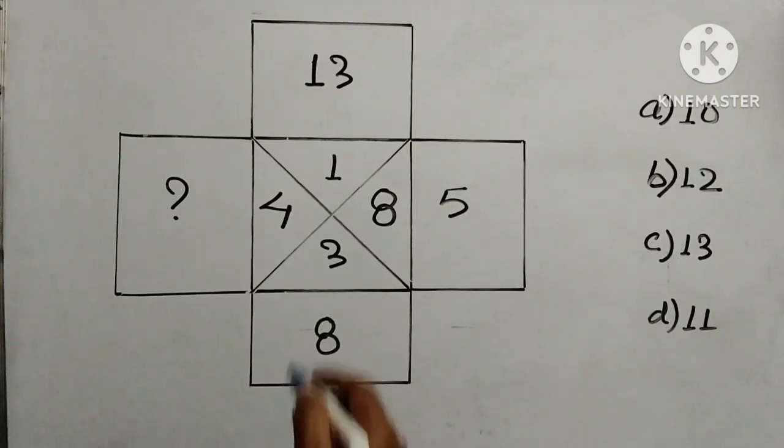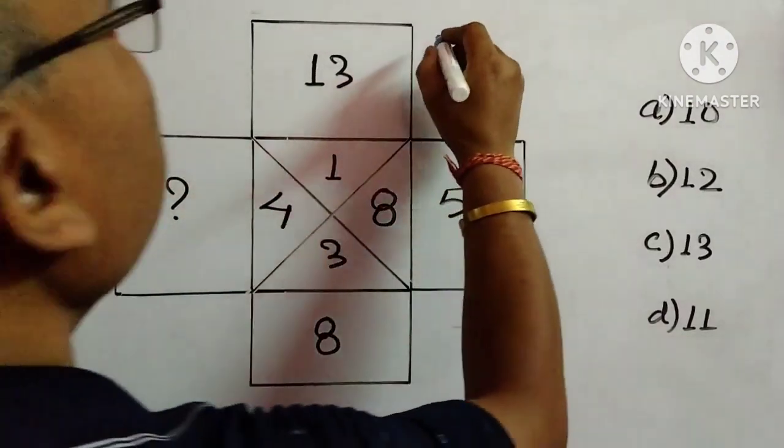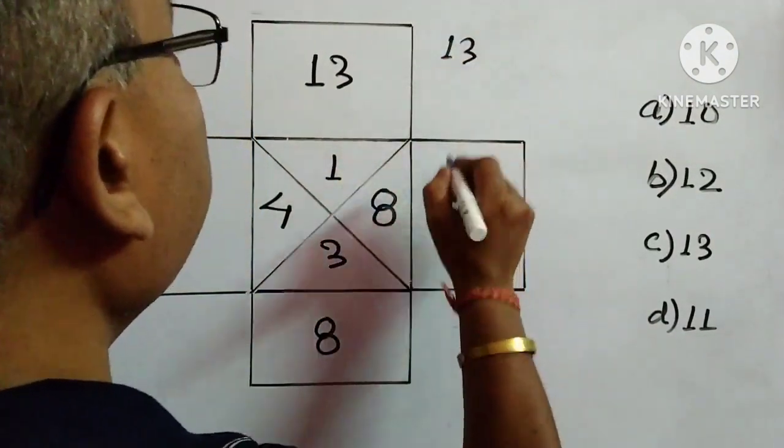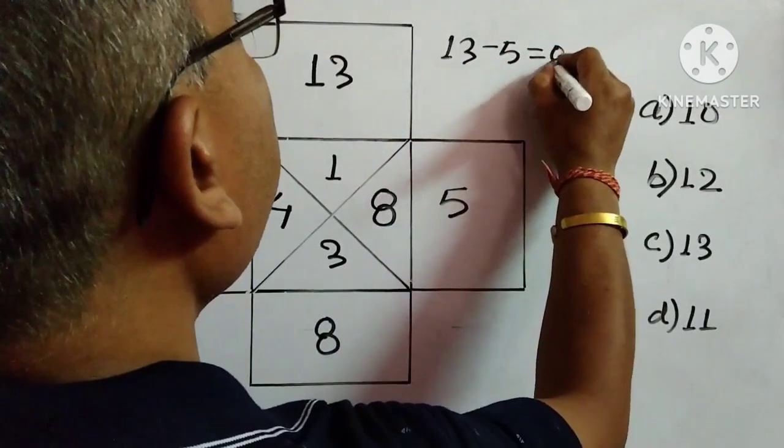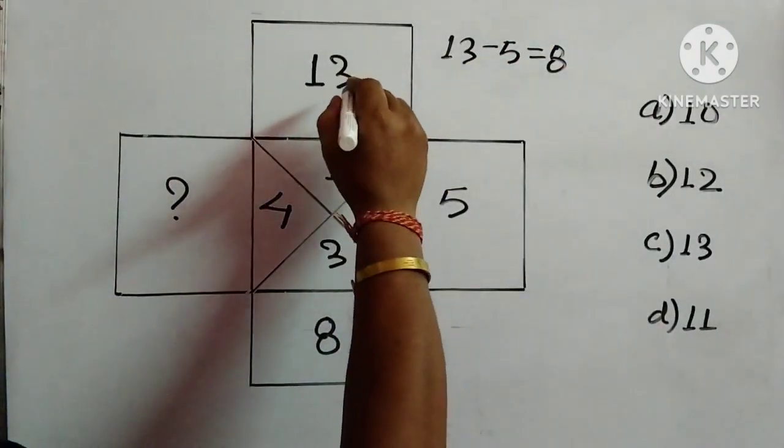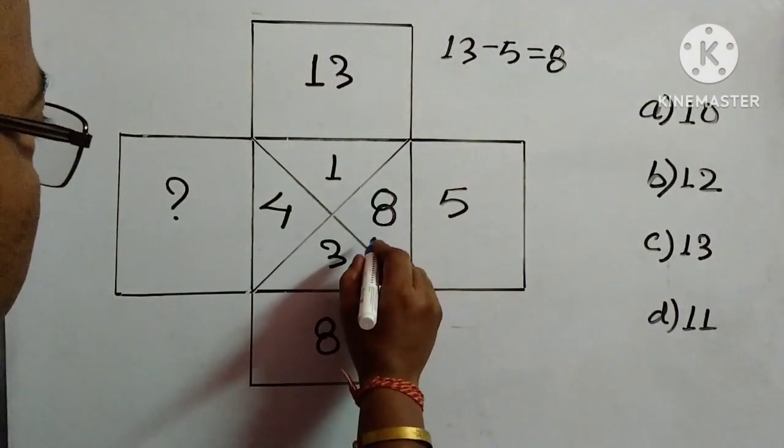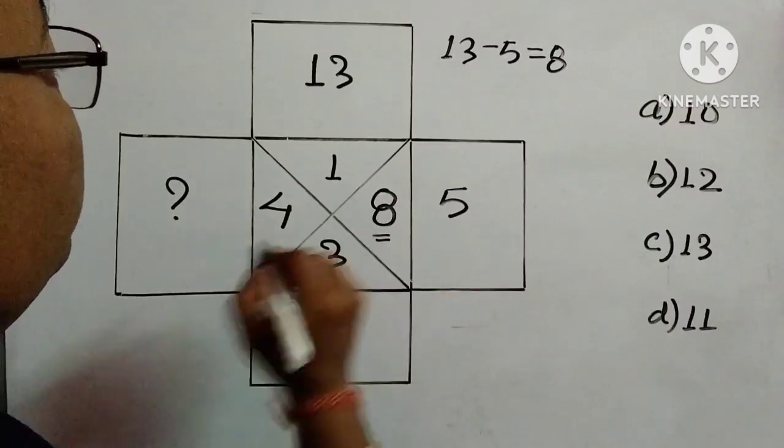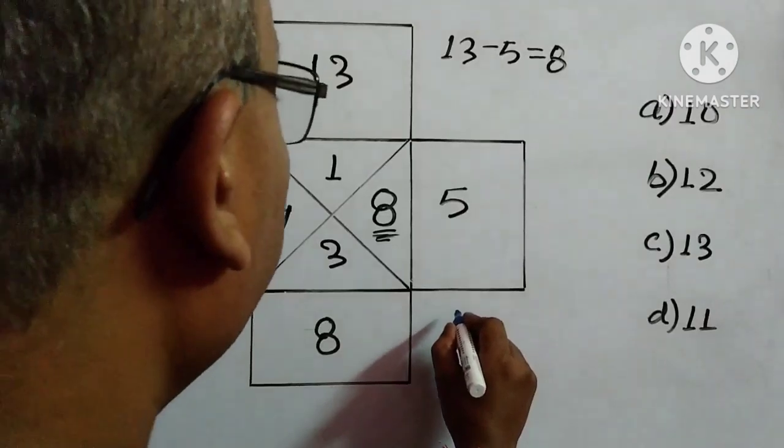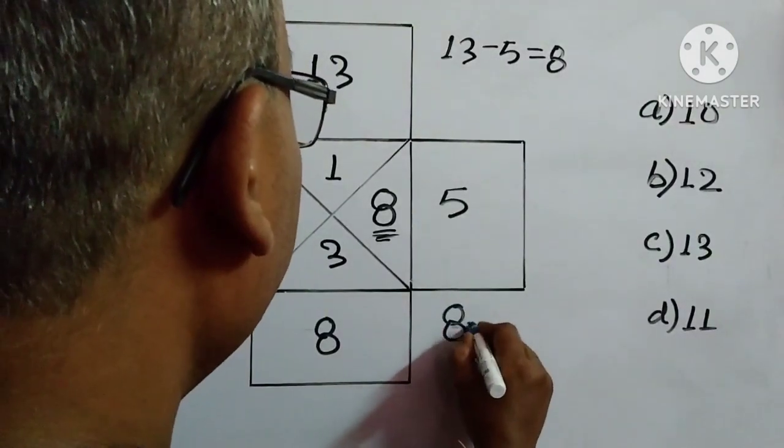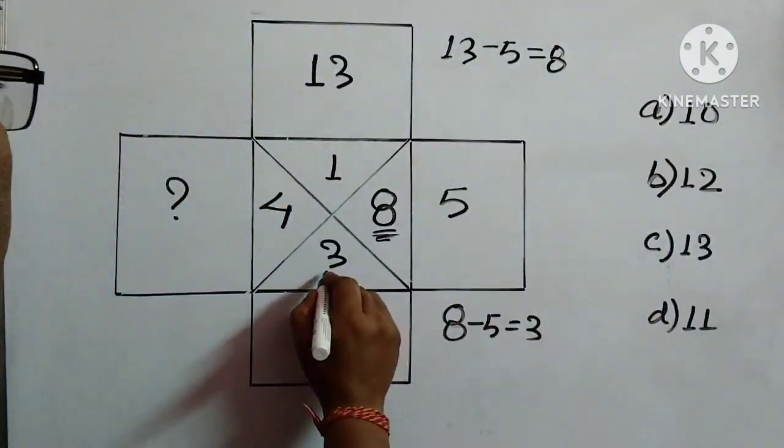So we will begin picking up this number and we will try out. So, 13 and we will subtract this one 5, so 13 minus 5 is 8. Now we are observing whenever we are picking up these two numbers and we are subtracting, the result is given over here, this one 8. Now again, we will pick this one 8 and 5, so 8 minus 5 is equal to 3, so 3 is given.